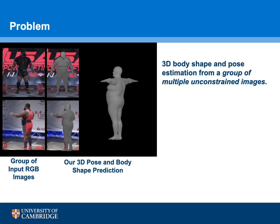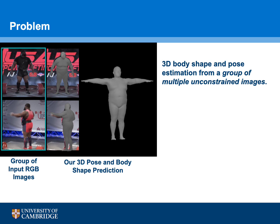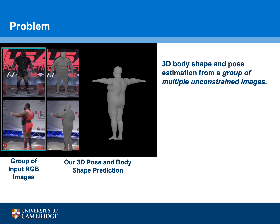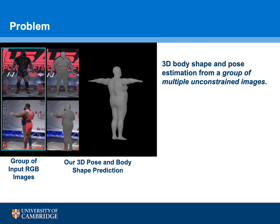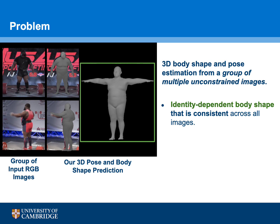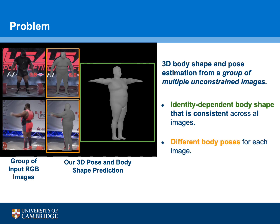Our aim is to predict 3D body shape and pose from a group of input images of a subject without any constraints on subject pose, camera viewpoint, or background and lighting conditions between images in the group. Our method predicts a single body shape that is consistent across all images in the input group, as well as a different body pose for each image.